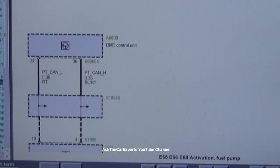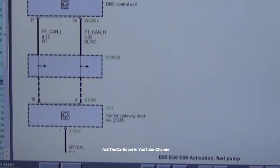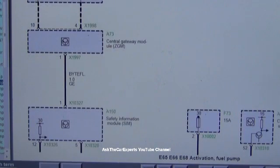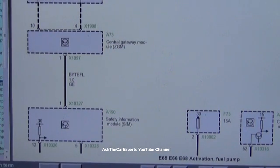I'm going to go over the wiring diagram to see how this actually works. The DME control unit is sending a signal to the central gateway module, also known as the ZGM. The ZGM goes to the safety information module. The SBSR is actually part of the bite flight system, which is part of the airbag monitoring and triggering system.